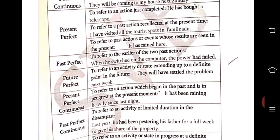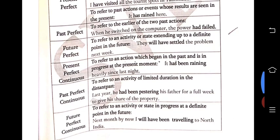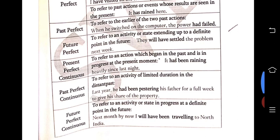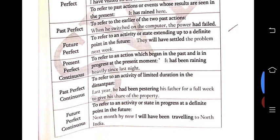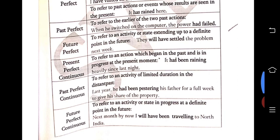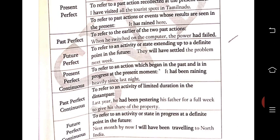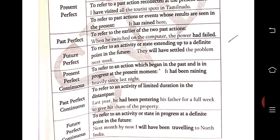Past perfect: very easy — if in the question you have two past actions, you can consider it as past perfect. Keywords: 'before' and 'after.' Example: 'when he switched on the computer, the power had failed.' Future perfect: to refer to an activity or state extending up to a definite point in the future — 'they will have settled the problem next week.' So present perfect, past perfect, and future perfect are all completed actions.